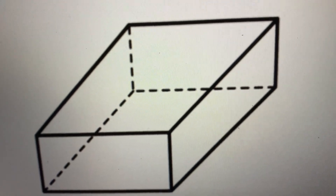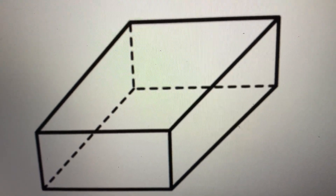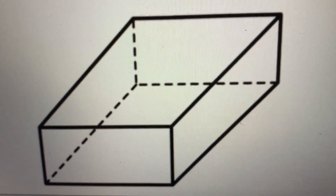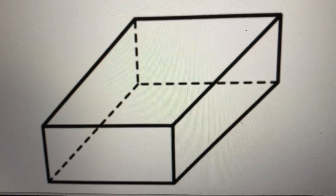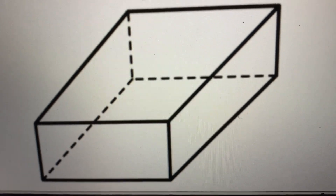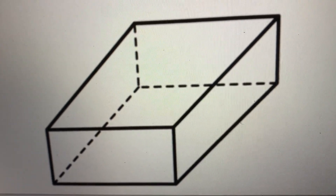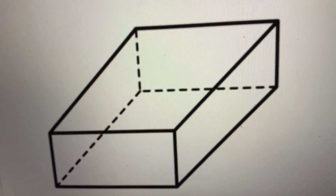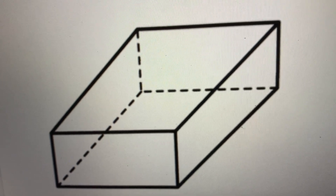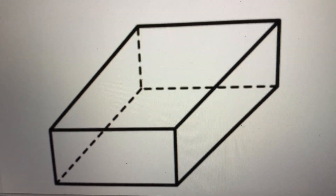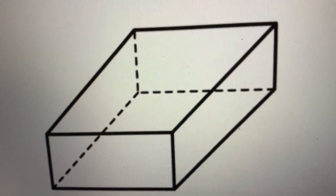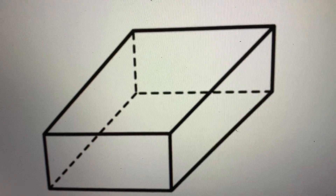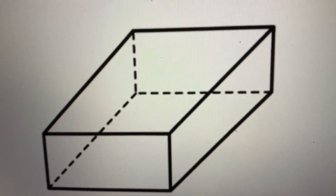Hi everybody, it's Ms. Kirchberg and I'm back to teach you more about 3D shapes. This is a picture of the 3D shape we are going to learn about today. It is called a rectangular prism. Let's say it together — rectangular prism.